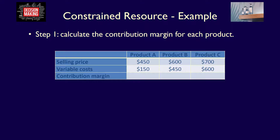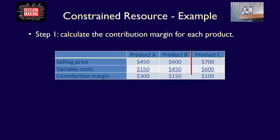To start, let's calculate the contribution margin for each product. Contribution margin is calculated as sales minus variable costs — it's the income that contributes to covering both fixed costs and the desired operating income. For product A, the sales price of $450 minus variable costs of $150 equals a contribution margin of $300. For product B, the sales price of $600 minus variable costs of $450 equals a contribution margin of $150. For product C, the sales price of $700 minus variable costs of $600 equals a contribution margin of $100.